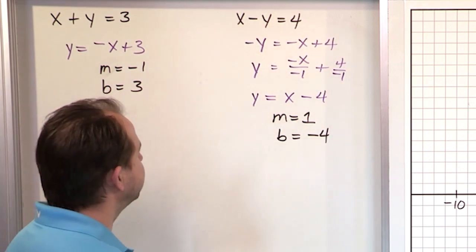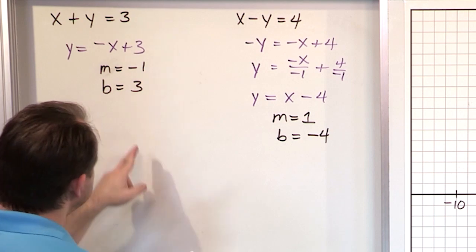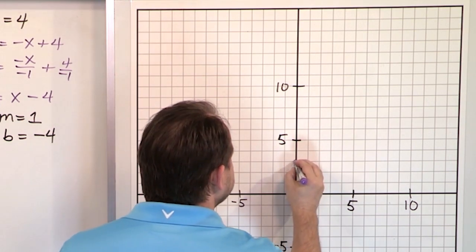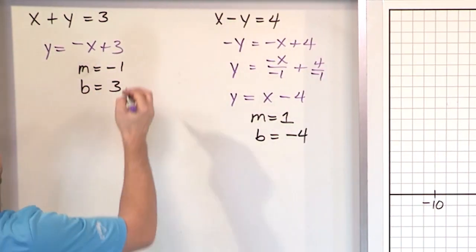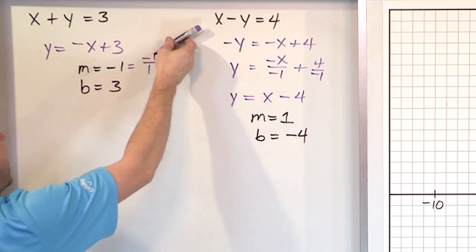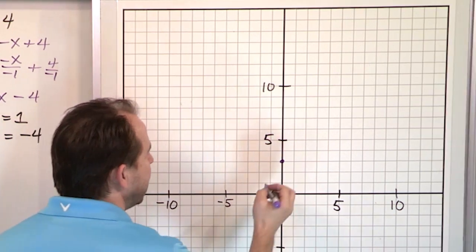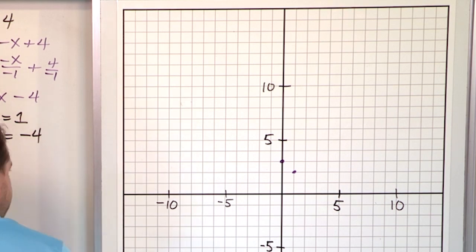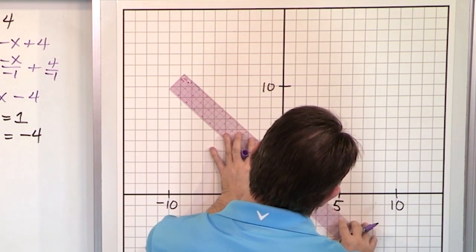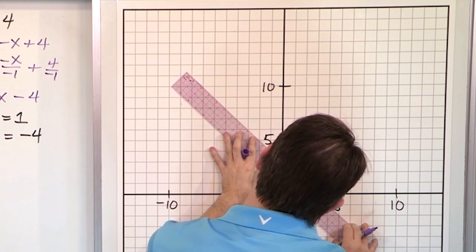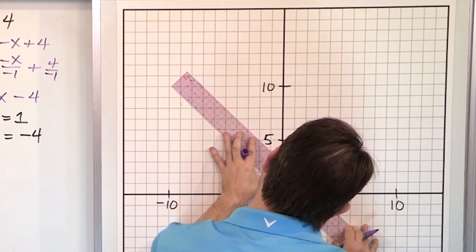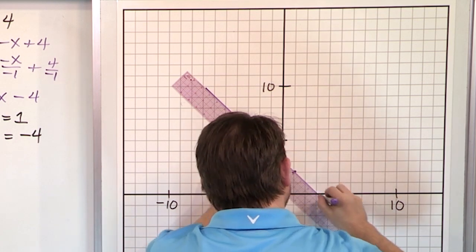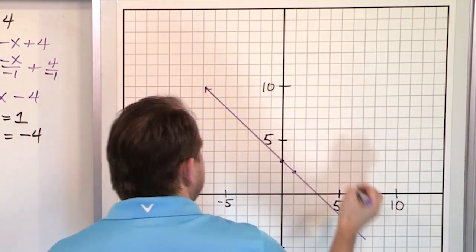So maybe there's no problem - maybe it does have a solution. Let's check it out. The y-intercept of 3 means it's going to be up here at 3. This has a slope of negative 1, which is negative 1 over 1 - rise down, run to the right, one time each. So one down, one to the right. And then we get our line. This is line number 1.